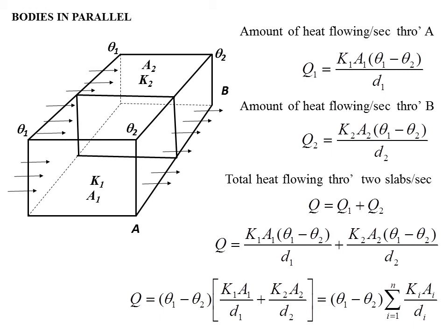Simplifying, Q equals (theta 1 minus theta 2) times sigma(KA/D), which gives the general formula for slabs connected in parallel.